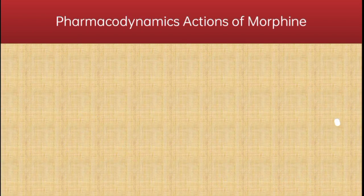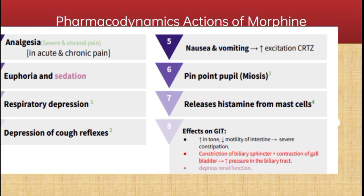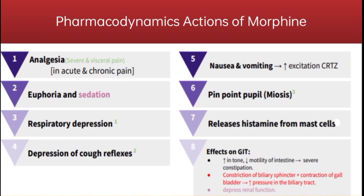Now the pharmacodynamic actions of morphine: morphine causes an analgesic effect by pre-synaptic and post-synaptic inhibition, cutting off the pain stimulus. It causes disinhibition of dopamine-containing neurons of the ventral tegmental area, producing a sense of self-contentment, euphoria, and sedation. Morphine causes respiratory depression by reducing the sensitivity of respiratory center neurons to carbon dioxide. It also has antitussive properties, causing depression of the cough reflex. Morphine directly stimulates the chemoreceptor trigger zone in the area postrema, causing vomiting. It stimulates mu and kappa receptors, causing pinpoint pupils via miosis.